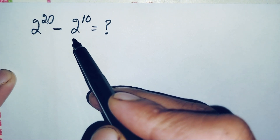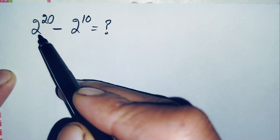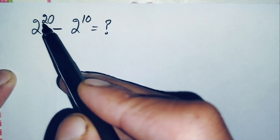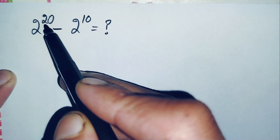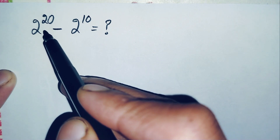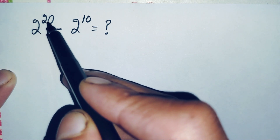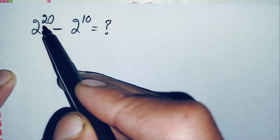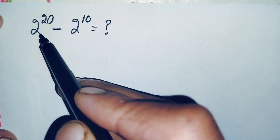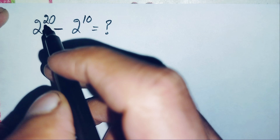Looking at the second term, this is 2 raised to power 10, so we will try to make 2 raised to power 10 appear here. There are two methods: one method is to factorize the power 20 as the product of 10 times 2 and use the exponential identity. The second method is to change this power to the sum of 10 plus 10, using the identity for raised to power m plus n. We will use this second method, changing 20 to the sum of 10 plus 10.